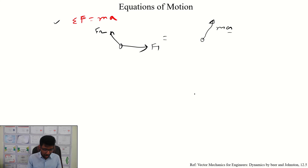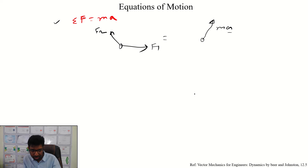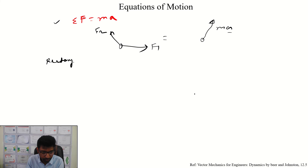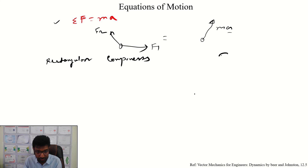If we take a particular scenario, we can move from component to component. It gets easier for us to solve different problems. We will take a look at the rectangular components, as well as the tangential and normal components.